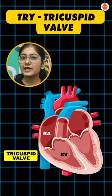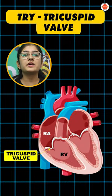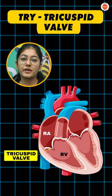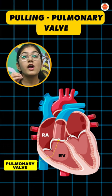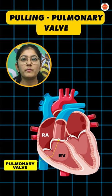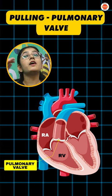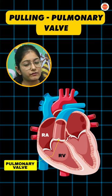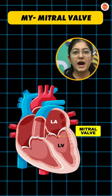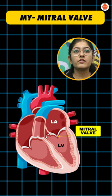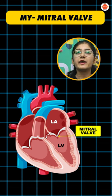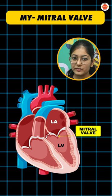Try — tricuspid valve, present between the right atrium and right ventricle. Pulling — pulmonary valve, present between the pulmonary artery and right ventricle. My — mitral valve, present between the left atrium and left ventricle.